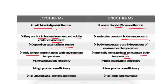Homeotherms, or warm-blooded animals, or endotherms — their body temperatures are independent of environmental temperature. In simple terms: ectotherms are cold-blooded animals because their body temperature changes with the environmental temperature, whereas warm-blooded animals maintain their body temperature constant.